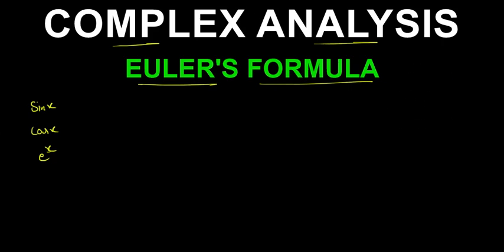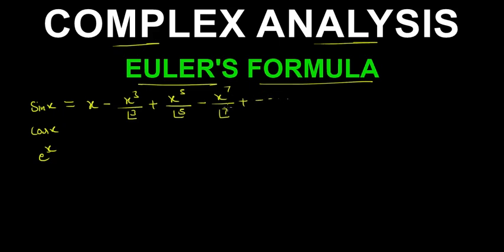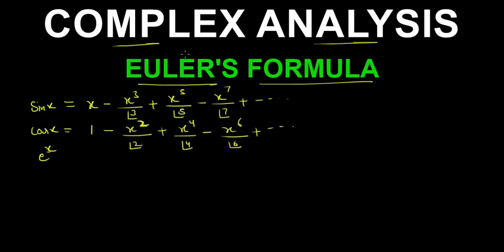The series expansion of sin x is: x minus x cubed by 3 factorial plus x to the power 5 by 5 factorial minus x to the power 7 by 7 factorial and so on. Cos x is: 1 minus x squared by 2 factorial plus x to the power 4 by 4 factorial minus x to the power 6 by 6 factorial and so on.